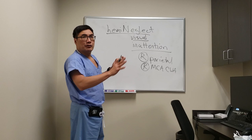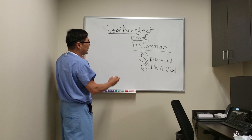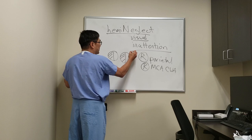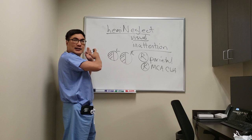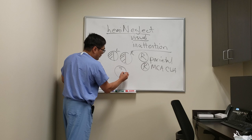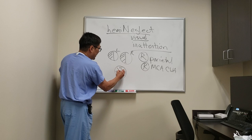It's the right side because there's redundancy on the left side, and if you have a lesion on the right there is no redundancy, so it can knock out the whole hemi field. Patients who have a left homonymous hemianopsia can still move their head and see, and they know that something's to the left — they just can't see it.